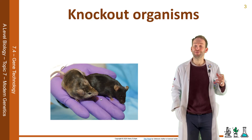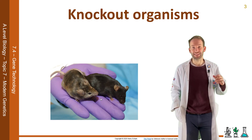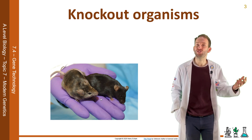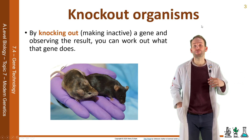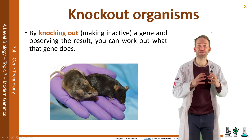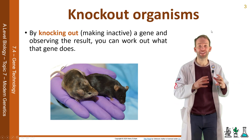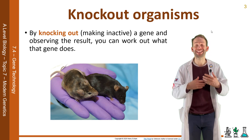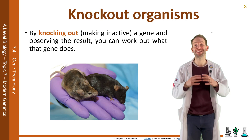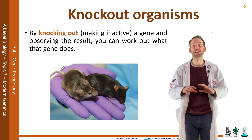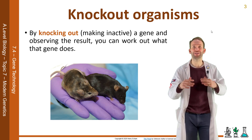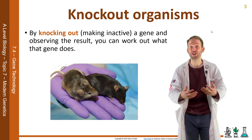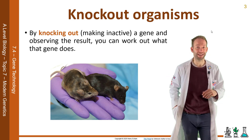By knocking out — making inactive — a gene and observing the result, you can work out what that gene was doing. This is done by inserting a new gene that is similar to the gene to be studied but which makes the original DNA sequence impossible to read, so the gene is silenced and therefore cannot make a protein. So we're knocking out a gene and stopping it working by inserting another gene that essentially ruins it.